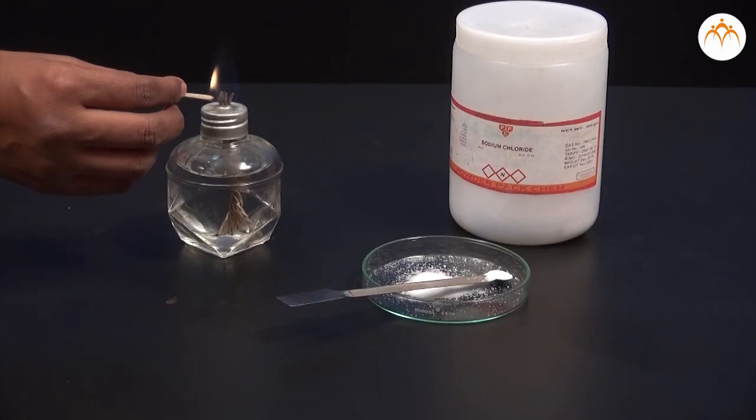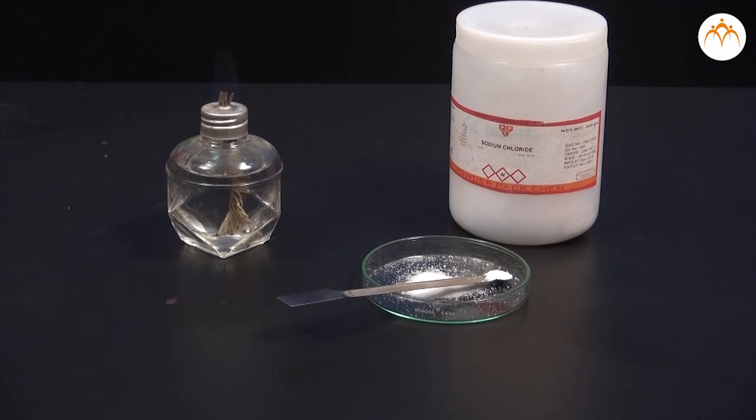To learn about the properties of ionic compounds, let us perform the following activity. Take a sample of sodium chloride, potassium iodide, and barium chloride.